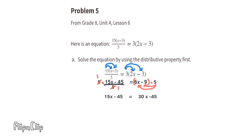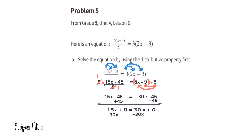The equation now reads 15x minus 45 equals 30x minus 45. Add 45 to both sides, leaving 15x equals 30x. Subtract 30x from both sides to get negative 15x equals 0. Divide both sides by negative 15, and x equals 0.